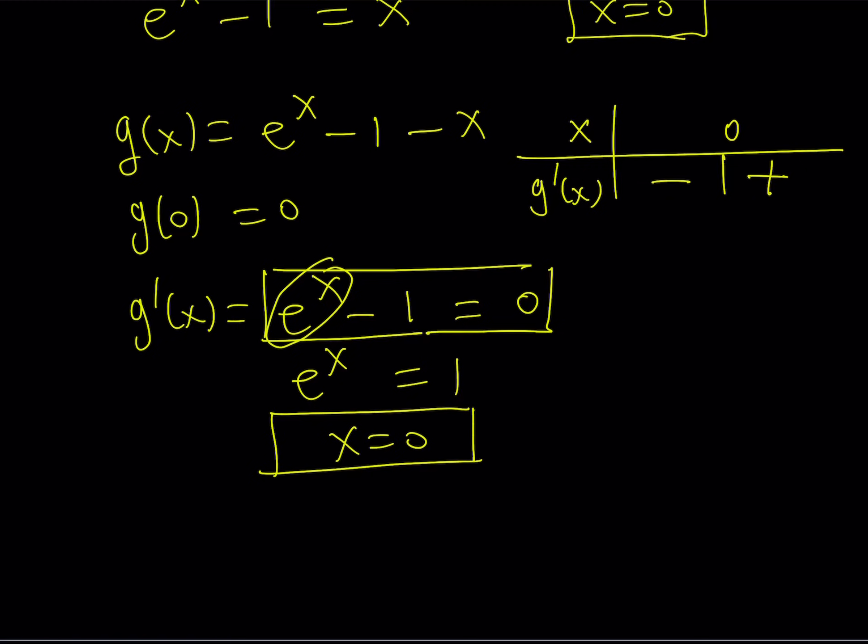And it's going to be negative. So this means that g is going to be a decreasing function if x is less than 0 and an increasing function if x is greater than 0, which means that we have a minimum at x equals 0.